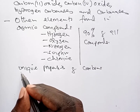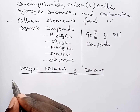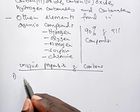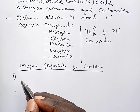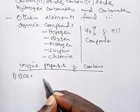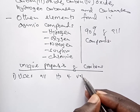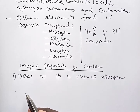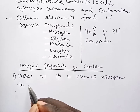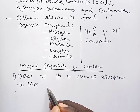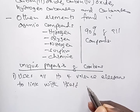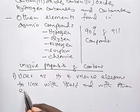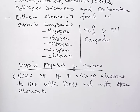The unique properties of carbon are three in number. The first one is that carbon has a valency of 4, which means it has four valence electrons. Carbon is able to use all its four valence electrons to link with itself and with other elements. This is one of the properties that make carbon form so many compounds on earth.